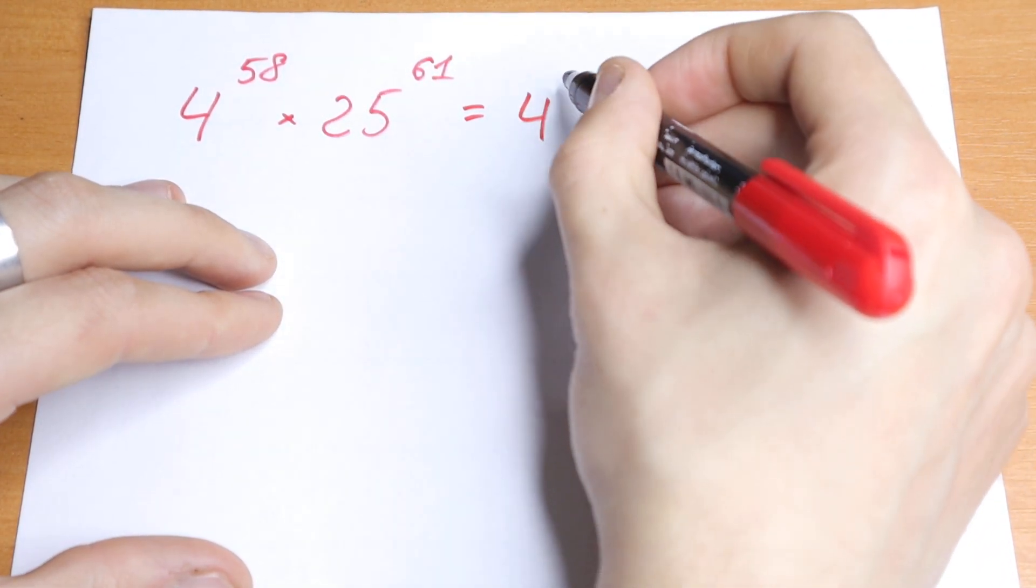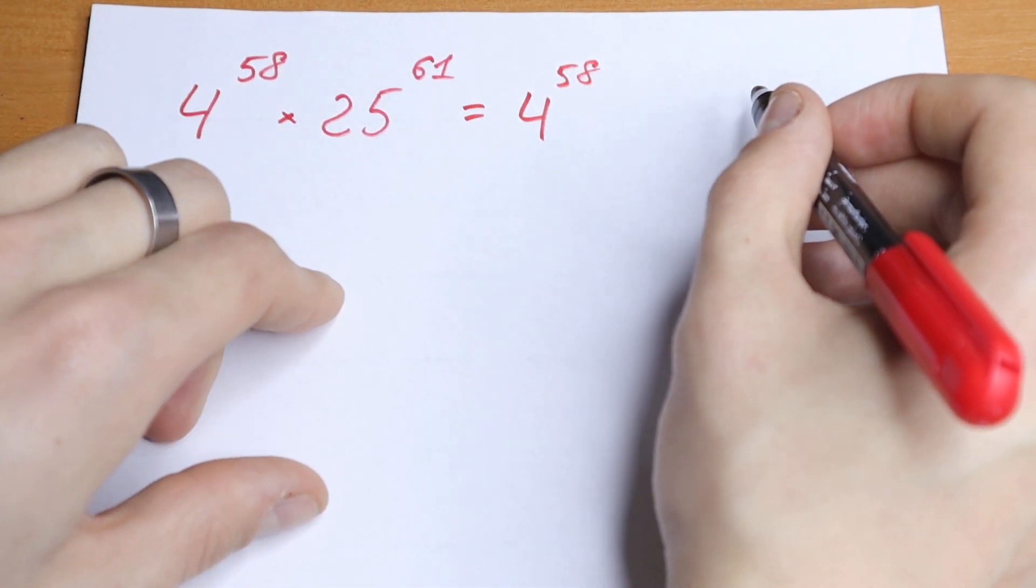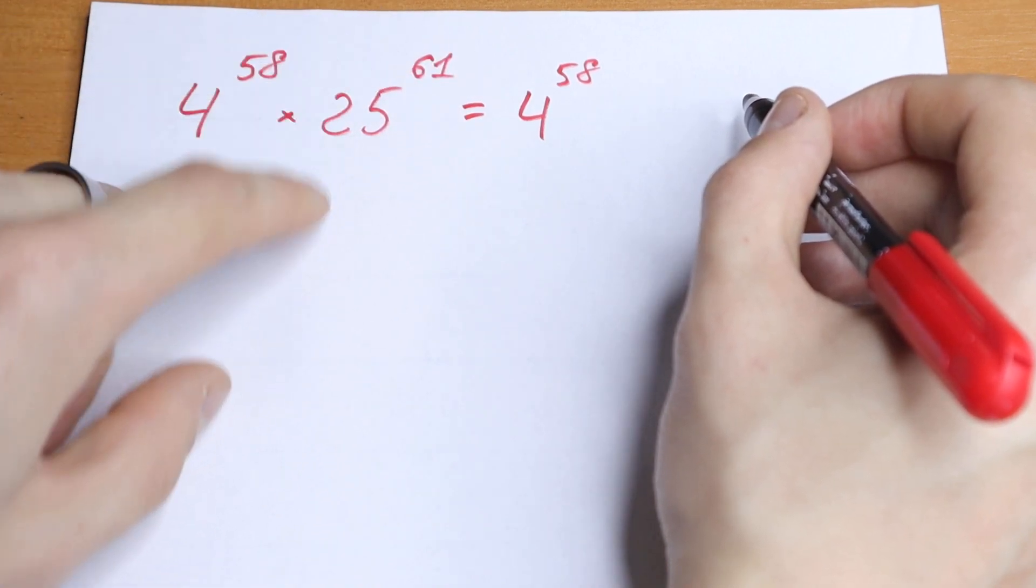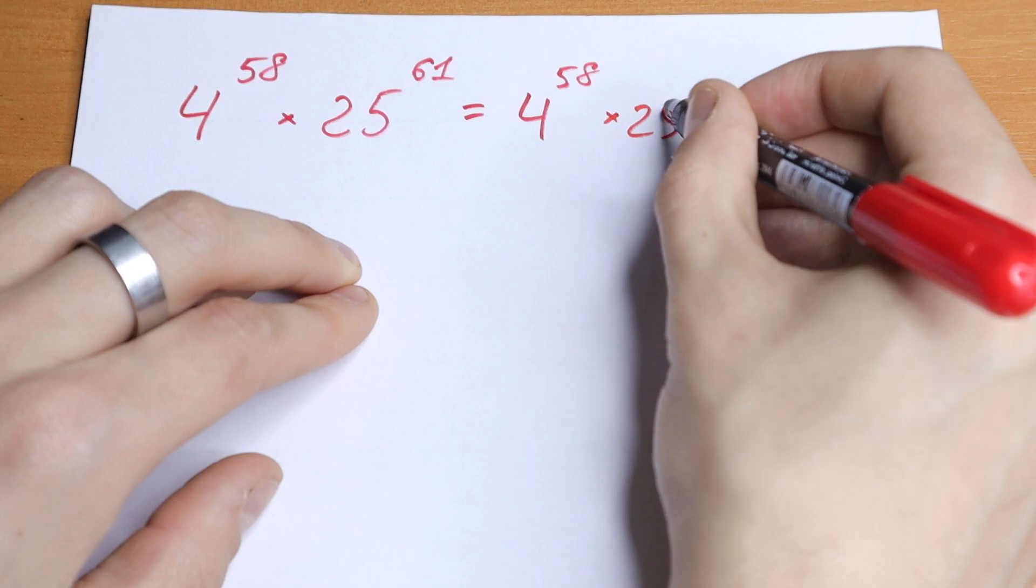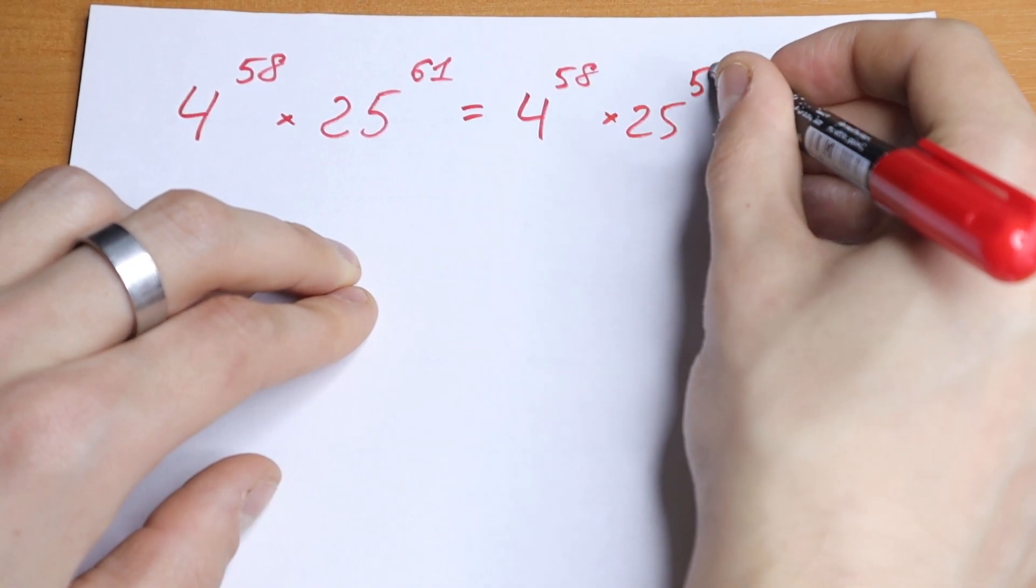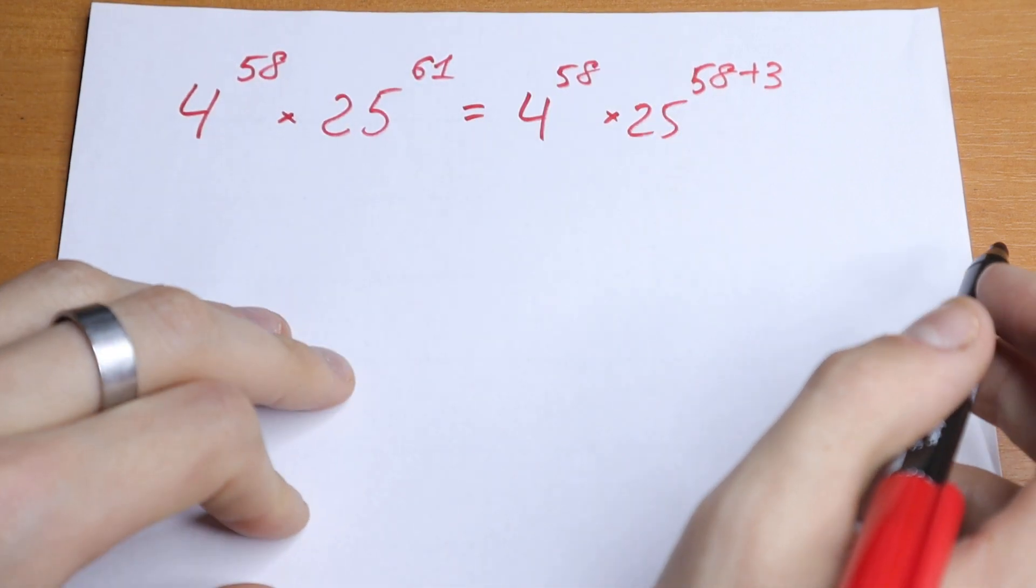Take a look, we'll write this as 4 to the power 58, and let's write this 61 as 58 plus 3. What we'll have times 25 to the power 58 plus 3. So we just write this 61 as 58 plus 3.